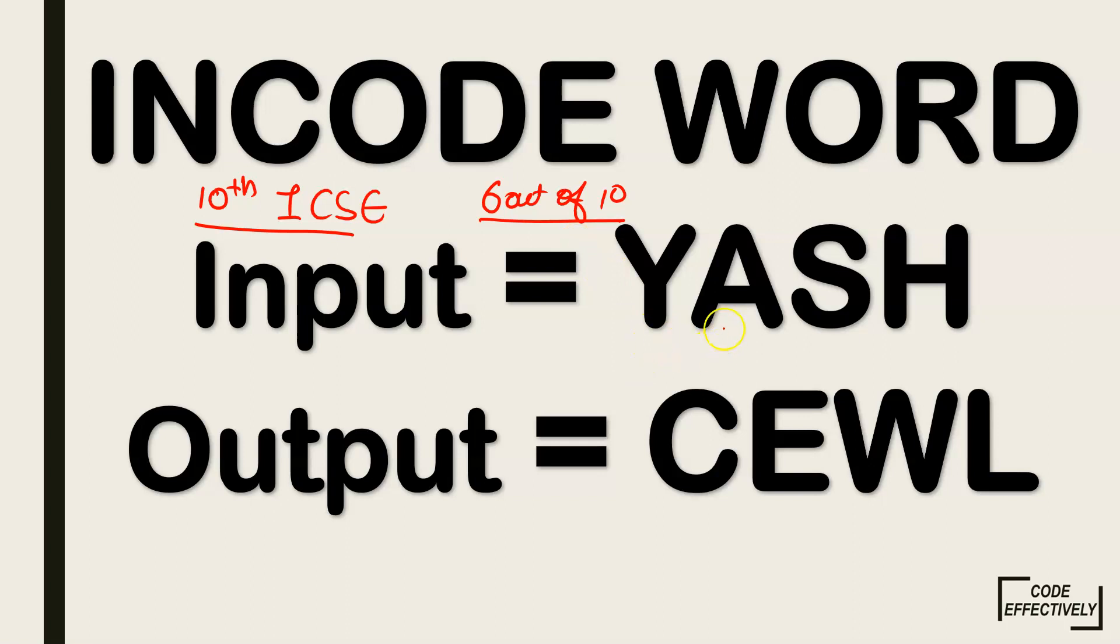So you can see here the difference between these words. If you input Y, A, S, H, you will get the output C, E, W, L. You can see the difference of the ASCII values in these words is 4. They are 4 words in front or 4 words after.